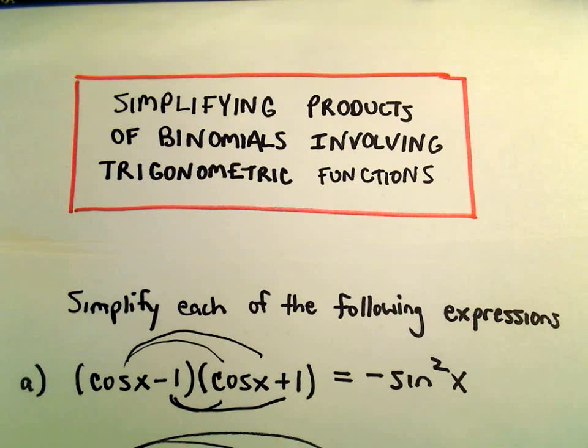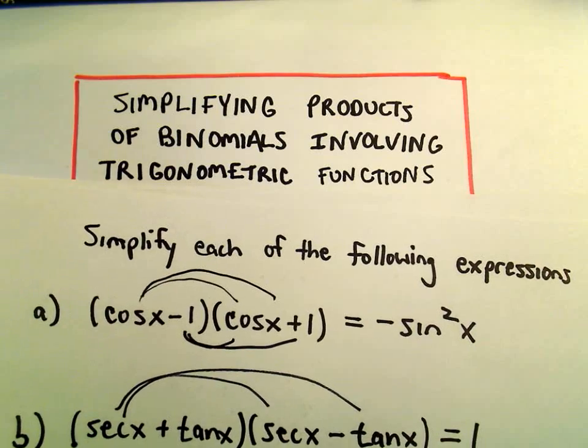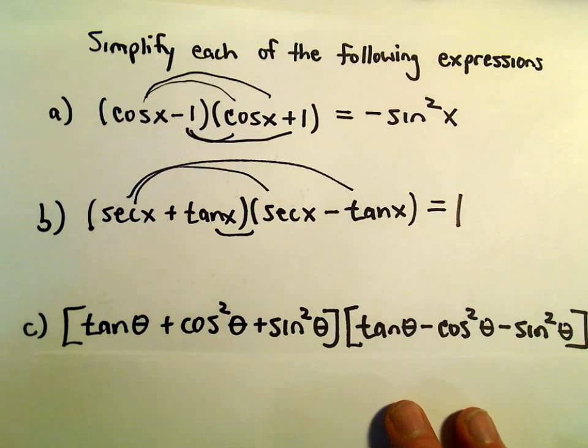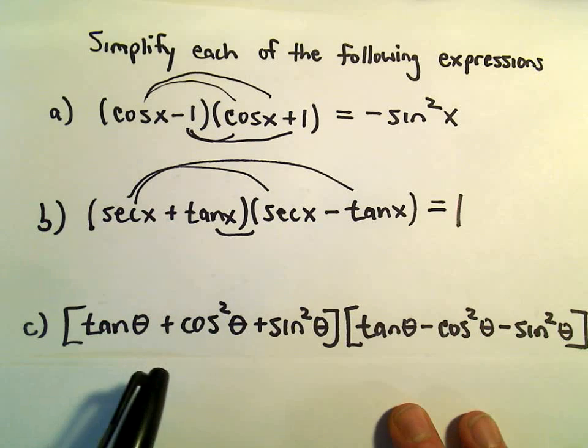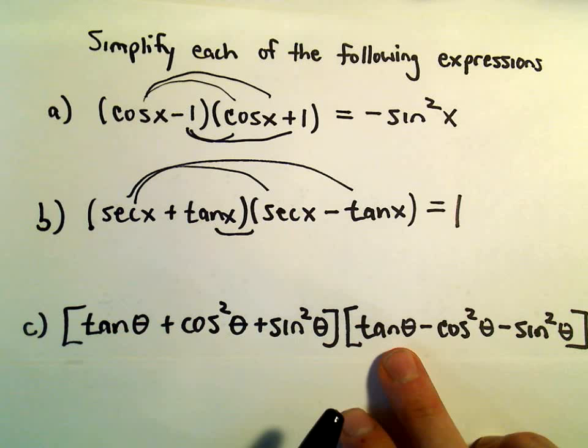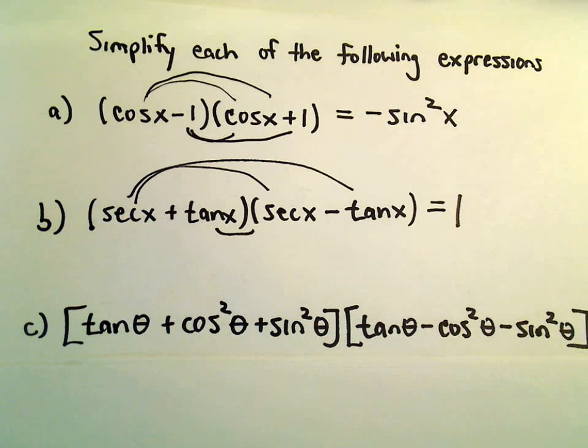All right, so one more example here of simplifying products of binomials involving trig functions. And the one that we left undone from the previous video was tangent of theta plus cosine squared theta plus sine squared theta multiplied by tangent theta minus cosine squared theta minus sine squared theta.